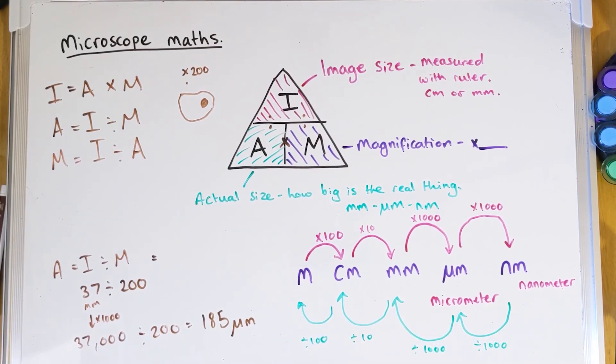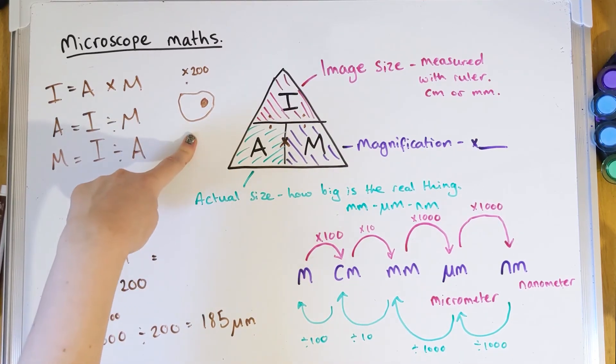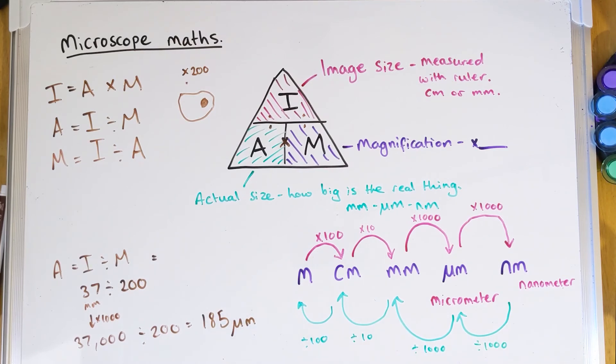If you're doing higher tier — especially triple science — you'll be expected to convert units within calculations. You might be given image size in centimetres and need to convert to micrometres first, or vice versa. Always make sure all values in your calculation use the same units, and use those units in your final answer, because you will lose marks for wrong units. We'll next be looking at cell transport: diffusion, osmosis, and active transport.